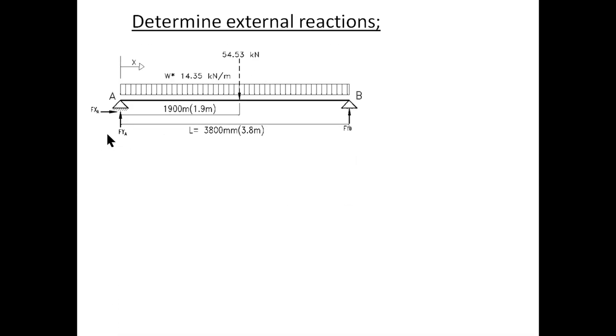The second step is to work out the external reactions FxA, FyA and FyB. The external sign convention that we will take in this case is up as positive, down as negative, left as negative, right positive.